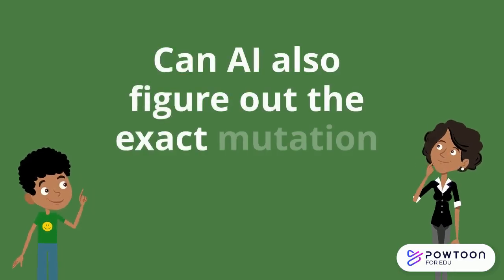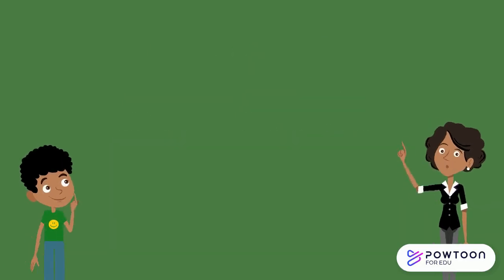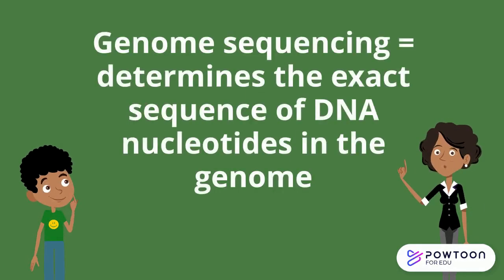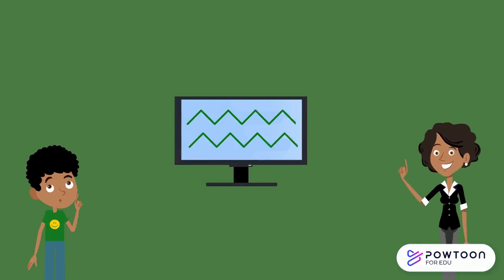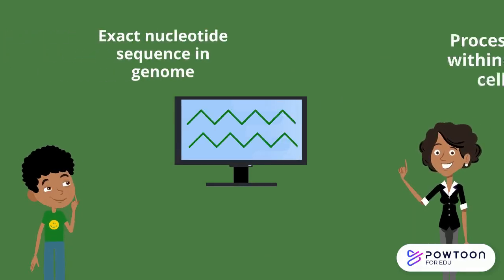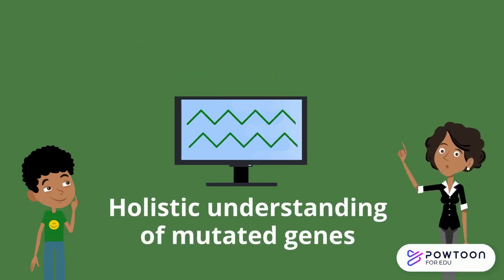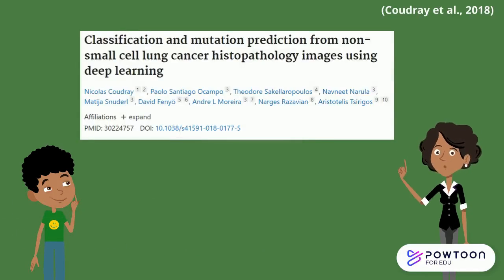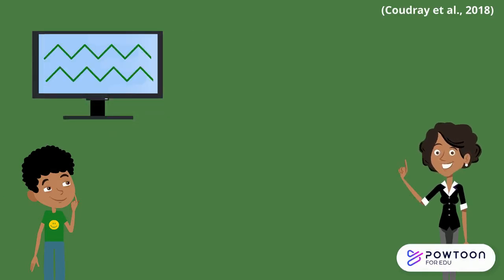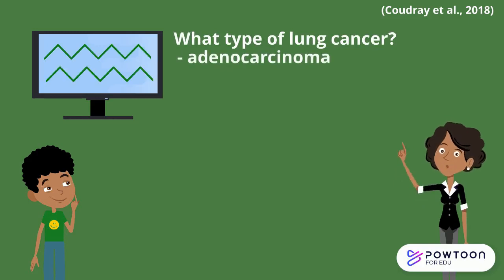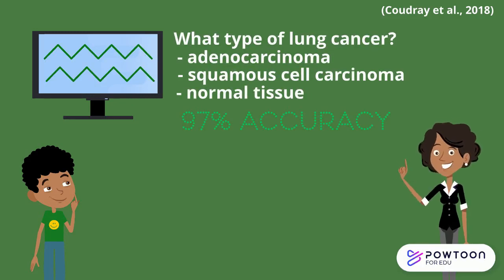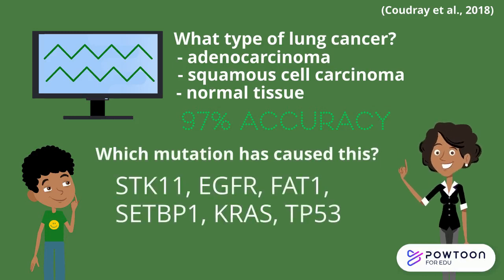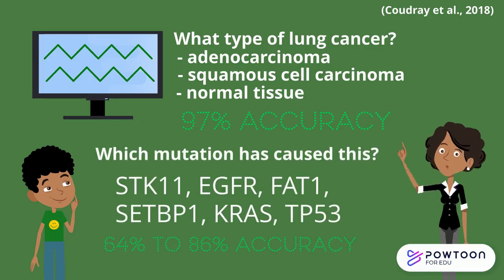Can AI also figure out the exact mutation that occurred to cause cancer? Yes, this is typically done by genome sequencing, which determines the exact sequence of DNA nucleotides in the genome. AI can speed up this process by integrating this information with the processes in the cell to get a holistic understanding of the mutated genes. For example, in one study, researchers trained AI technology to classify lung cancer images as either having adenocarcinoma, squamous cell carcinoma, or normal tissue. It was able to do this with a 97% accuracy. It was also able to identify six of the most common genetic mutations, all within a 64% to 86% accuracy.